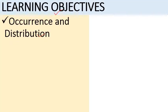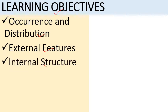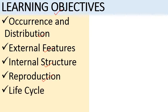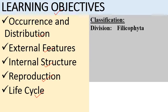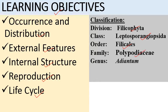Next come today's learning objectives. We will discuss its occurrence and distribution, then its external features, then internal structures of root, stem, petiole, and rhizome. Then we will discuss its reproduction and finally the life cycle of Adiantum. Before starting, we will discuss its classification: Division Filicophyta, Class Leptosporangiopsida, Order Filicales, Family Polypodiaceae, Genus Adiantum.